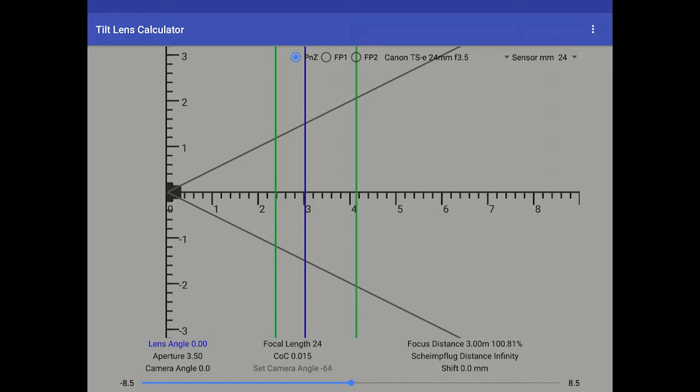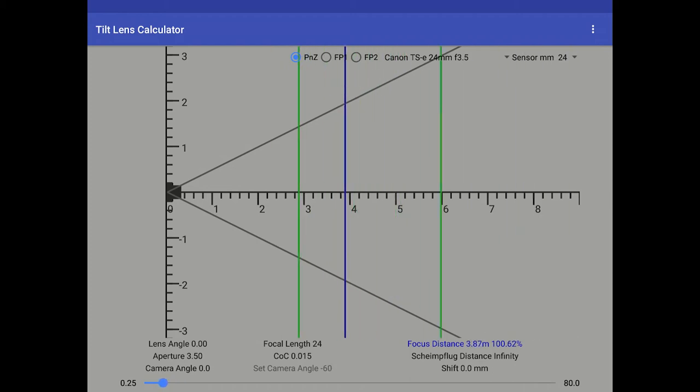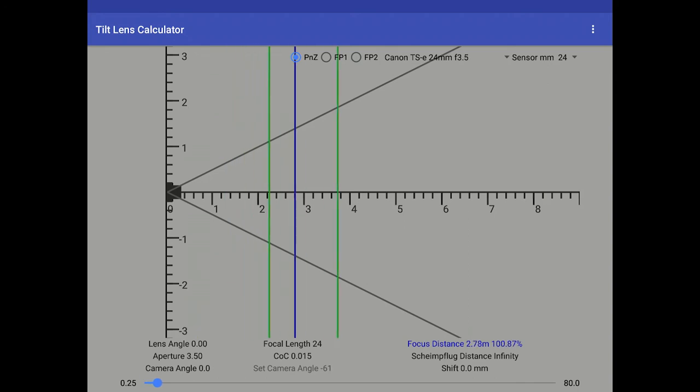Focus distance, three meters. Now that's just a default value, but if I select the focus distance, then the slider will let me change the focus distance, and you see the depth of field vary accordingly.